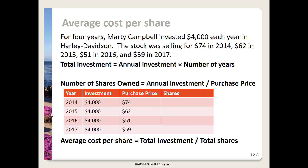Next is calculating the average cost per share. For four years, Marty Campbell invested $4,000 each year in Harley-Davidson. The stock was selling for $74 in 2014, $62 in 2015, $51 in 2016, and $59 in 2017. In the first part, we want to know what was Marty's total investment. We take the annual investment of $4,000 and multiply it by 4 years, giving a total investment of $16,000.